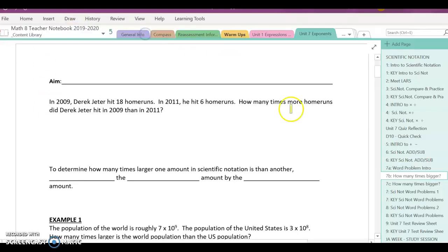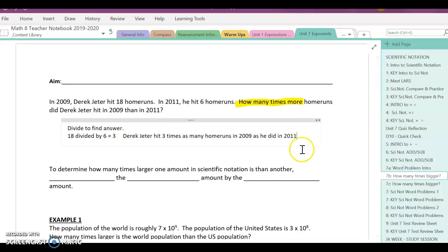So here this is that key phrase: how many times more, not how much more. How many times more means that we are going to - how many times the amount in 2011 did he hit in 2009? So essentially we need to use division. Divide to find the answer. So 18 divided by 6 equals 3. Derek Jeter hit 3 times as many home runs in 2009 as he did in 2011. He hit more in 2009, three times as many.